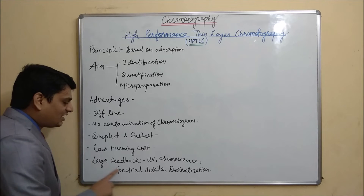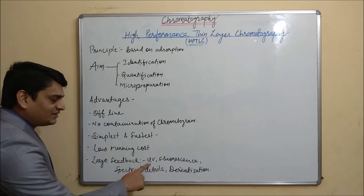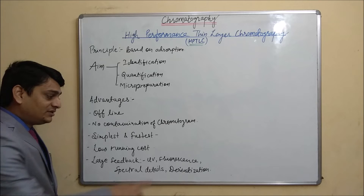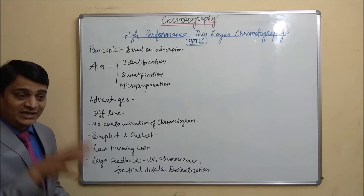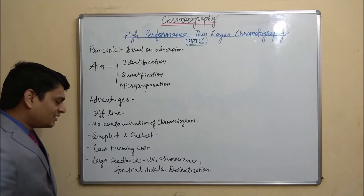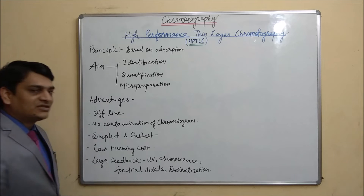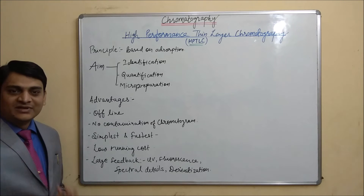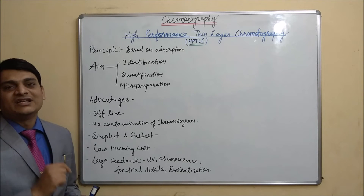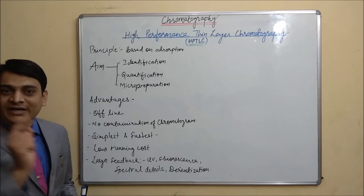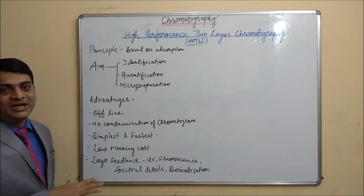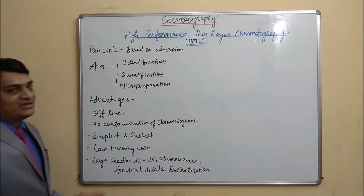The next advantage is large feedback. The HPTLC scanner uses a UV lamp to detect compounds, and it can also detect compounds based on fluorescence. UV and fluorescence detection systems are already present in the HPTLC scanner. Additionally, the HPTLC scanner provides spectral details — it gives the UV spectrum for that particular detected spot.